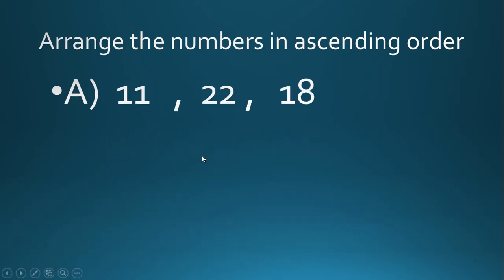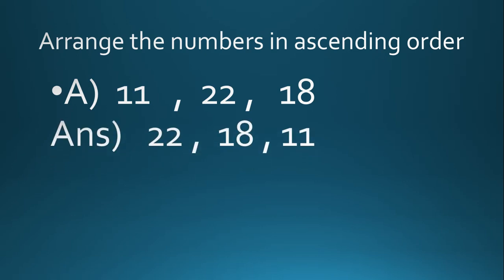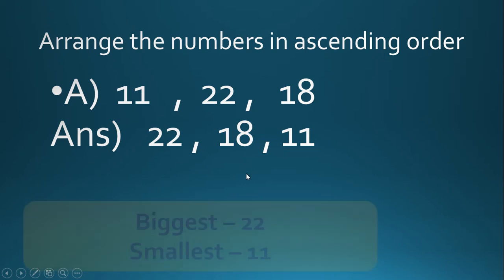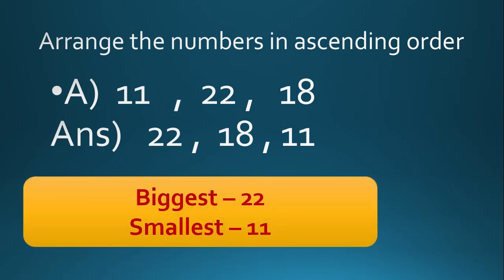Now one more question. With the help of the rules, we will arrange the numbers in descending order. The numbers are 18, 22, and 11. All are two-digit numbers. Using the second rule, check the tens place and the ones place. On the ones place, one appears in both 11 and — but on the tens place, two is there for 22. So 22 is the biggest, then 18, and then 11. Biggest is 22 and smallest is 11.